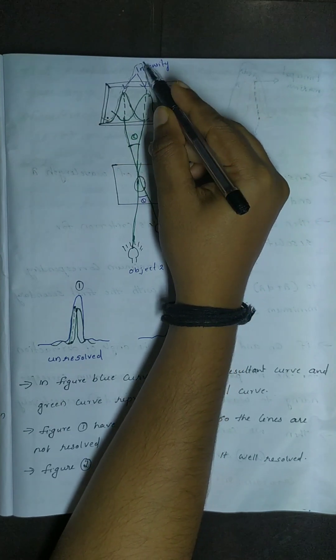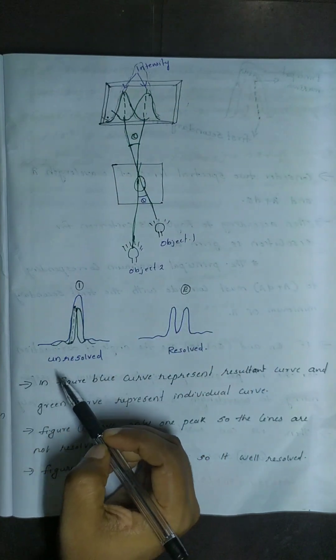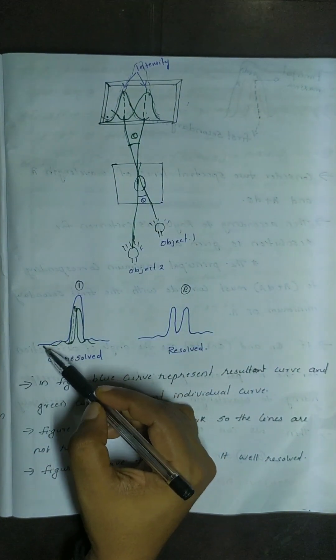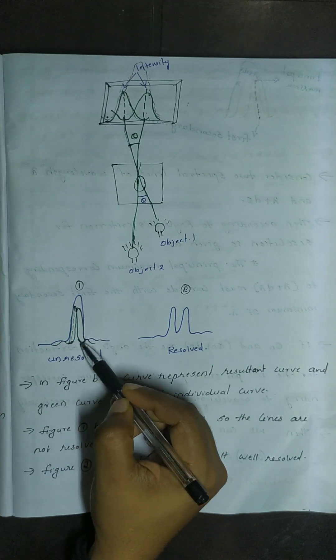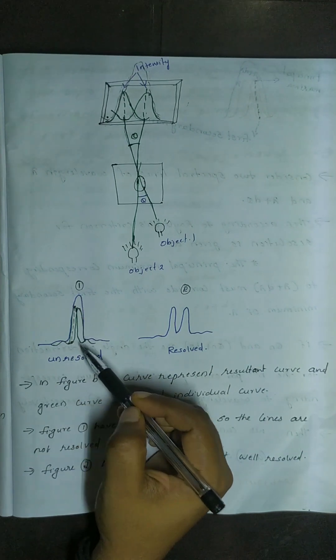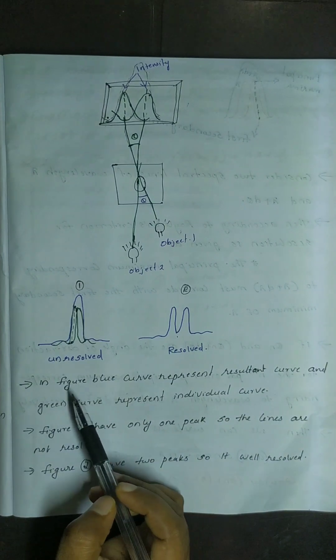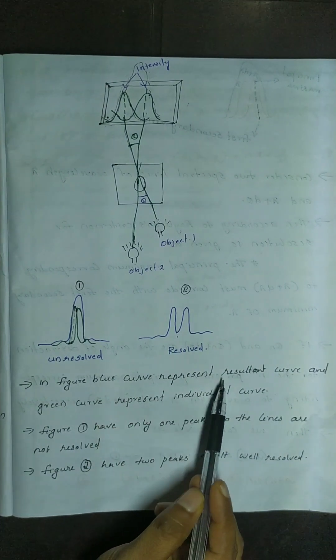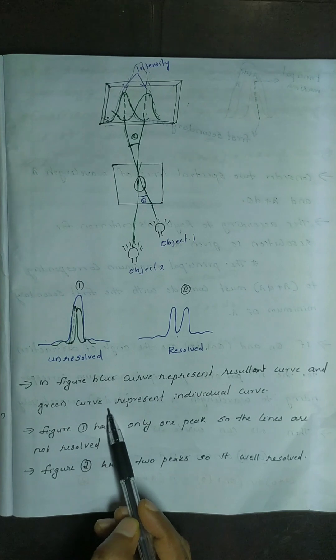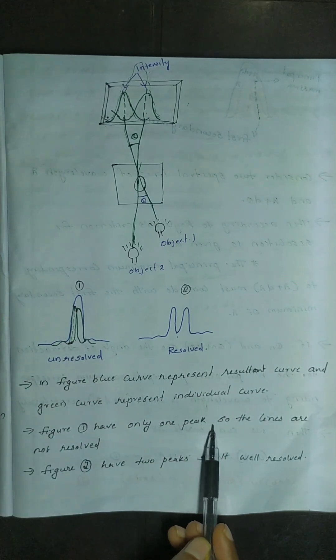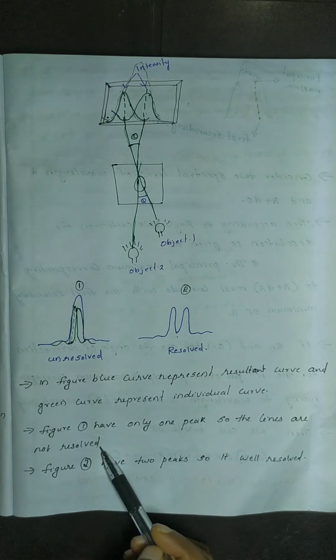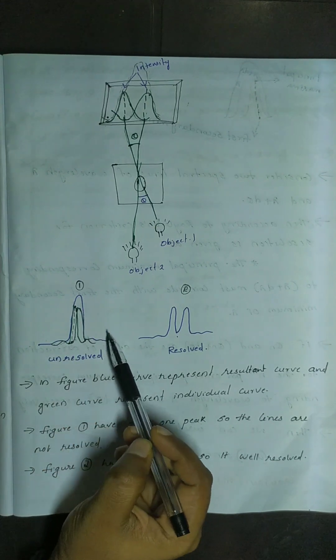This is the resultant wave. The unresolved wave is shown as a blue line, and the individual waves are in green. In Figure 1, the blue curve represents the resultant curve and the green curve represents the individual curve. Figure 1 has only one peak, so the lines are not resolved — if there is only one peak, it is not resolved.